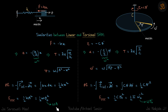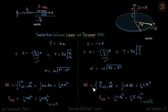Now the equivalent equations for torsional SHM: F = −kx becomes torque τ = −c·theta-dash, where theta-dash is the angle turned by the body. Since torque = I·alpha, we get alpha = −(c/I)·theta-dash. This gives time period T = 2π√(I/c). The angular velocity omega-dash at angle theta-dash is: omega-dash = omega·√(theta-naught-dash² − theta-dash²), where theta-naught-dash is the maximum angular amplitude. We take this direction for theta-dash and omega-dash as positive.